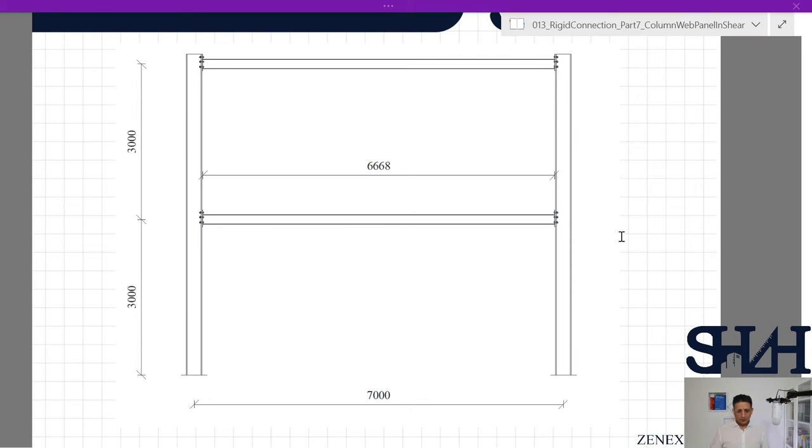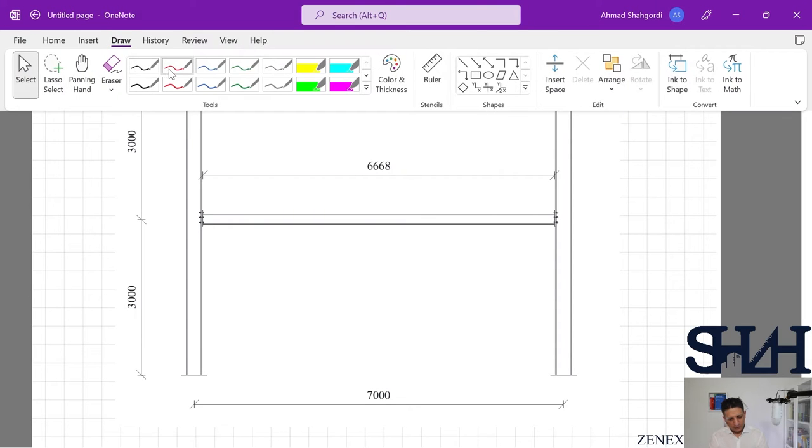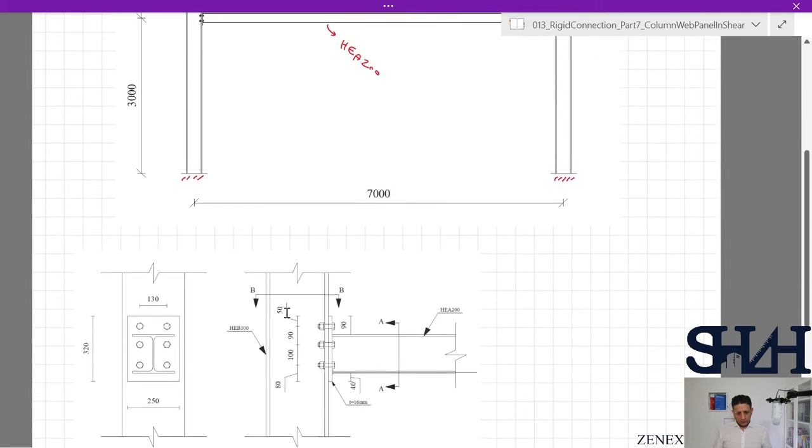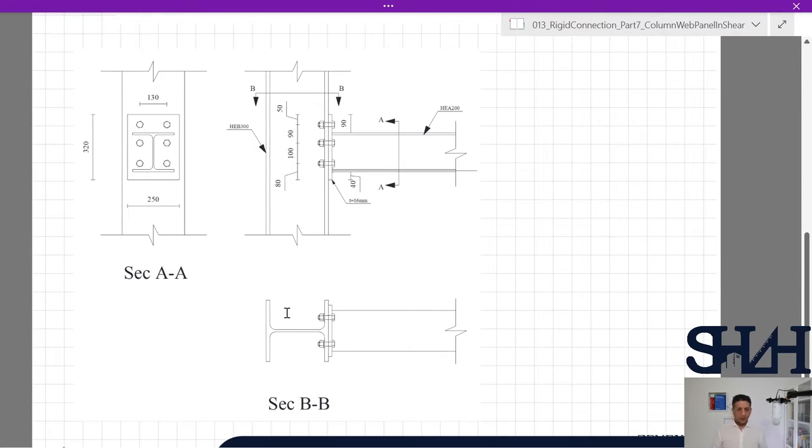Here is the definition of our example. We have two columns HEB 300 that we introduced in the last video, and beams are HEA 200. The distance center to center of the columns is 7 meters. As a result, the net length of the beam is 6,668 millimeters. The height of the column is 3 meters for each level and it is supported rigidly to the ground.